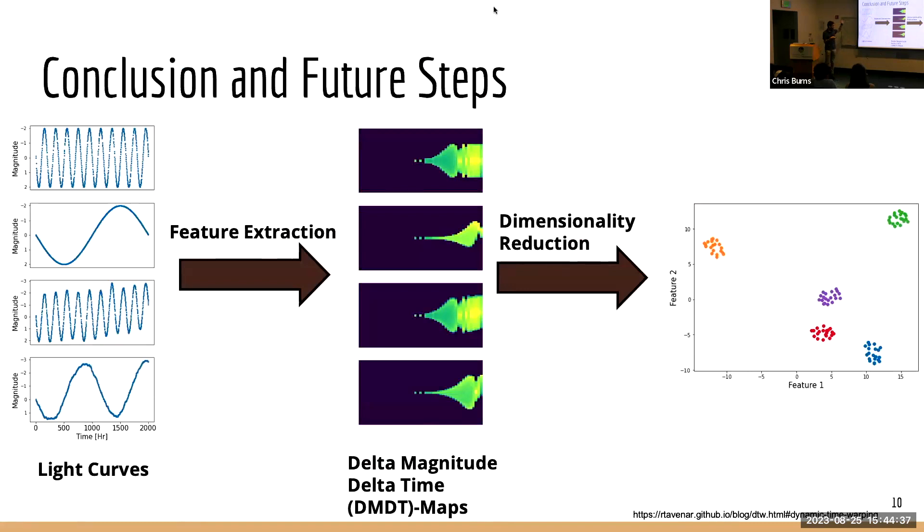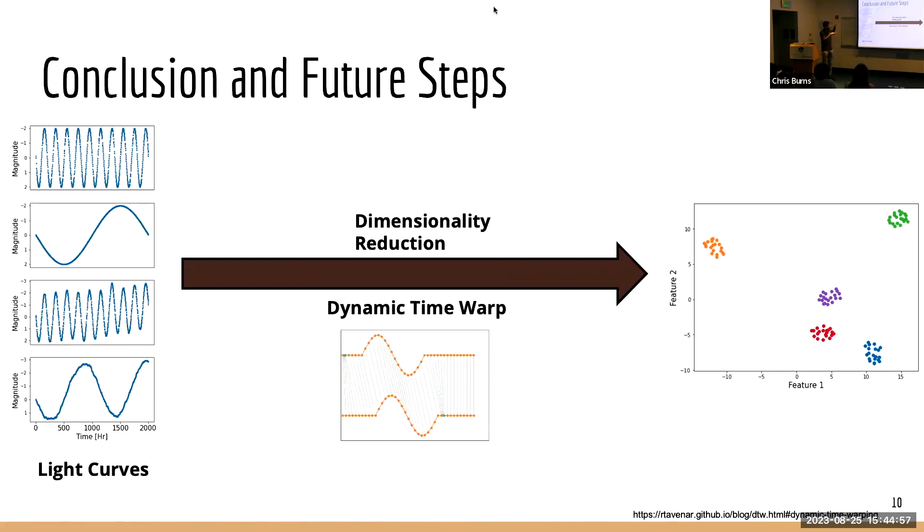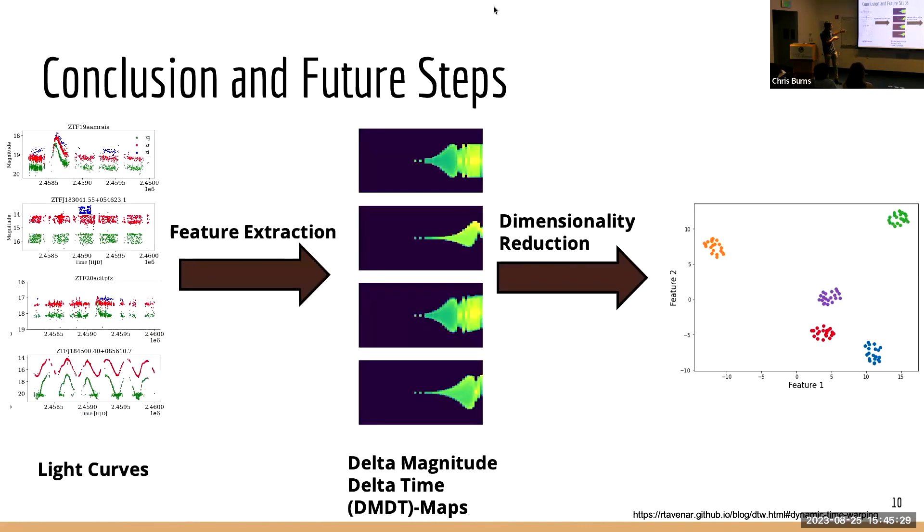So in conclusion, we take light curves, we extract a set of features from them and represent them as these delta magnitude delta time maps. Then we perform dimensionality reduction on these maps and get a lower representation of these light curves as points in 2D space. In the future, what we plan on doing is completely getting rid of this feature extraction step and looking at another technique called dynamic time warp, where we can directly compare between different light curves. This image shows how that comparison is done between the different points on the light curve. This is a technique that we can use to evaluate and compare against our original feature extraction method. And then lastly, we want to apply this method to real ZTF light curves to find hidden gems in ZTF light curves. Thank you very much for listening.